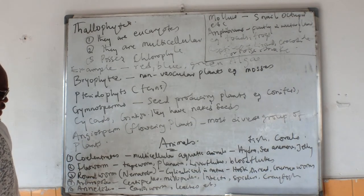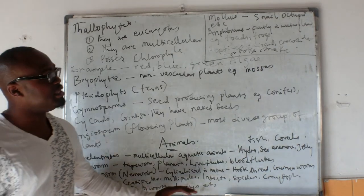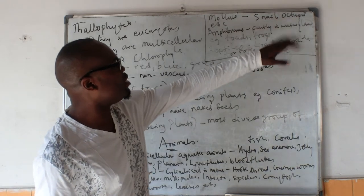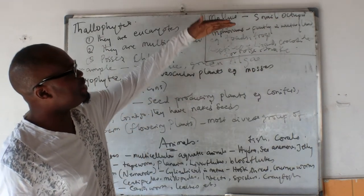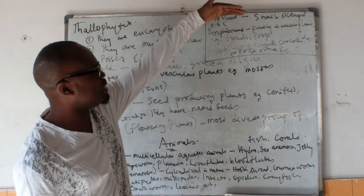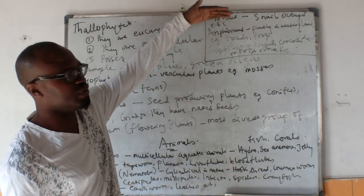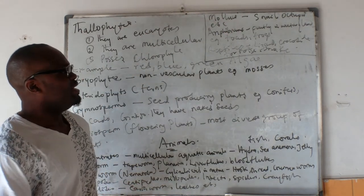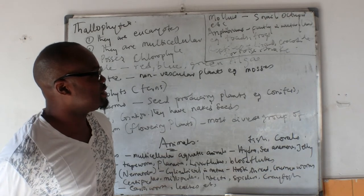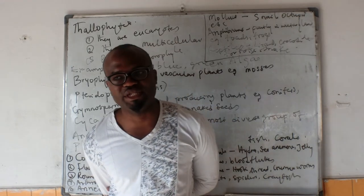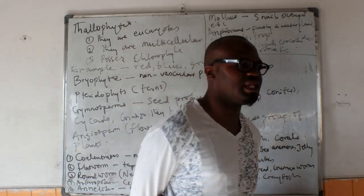Finally, we have the annelids — here we have the earthworm and the leeches. We also have the mollusks, which include snails and the octopus. We have the amphibians and the reptiles. The amphibians live partly in water and partly on land, with animals like the frog, crocodile, otters, and snake.